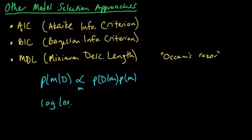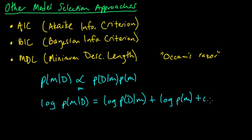So if you took the log of this thing, log of the probability of the model given the data, maximizing the log is the same as maximizing the original thing. That's equal to the log of the probability of the data given the model, plus the log of the probability of the model, plus some constant.